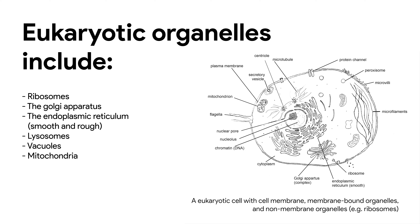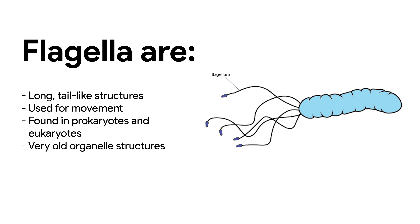Eukaryotic cells, or eukaryotes, are much more complex. Their genetic material is located in a distinct nucleus with a clear nuclear membrane, or nuclear envelope. Eukaryotic cells also have a clear structure with many organelles. The major organelles in an animal cell include ribosomes, Golgi apparatus, the endoplasmic reticulum, vacuoles and mitochondria. Eukaryotic cells also have non-membrane-bound organelles. Each part of a cell carries out a specific function. Different types of cells have additional organelles — for example, plant cells have chloroplasts, which are necessary for photosynthesis. Animal cells don't have chloroplasts.